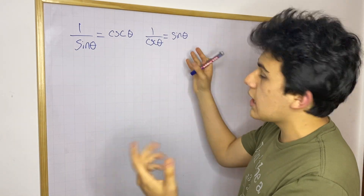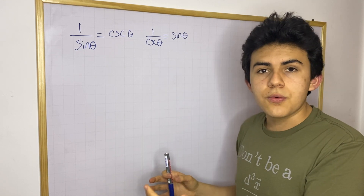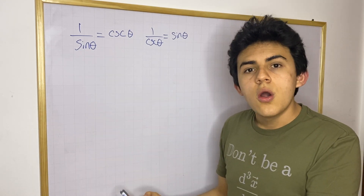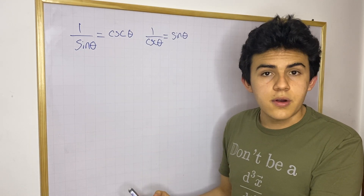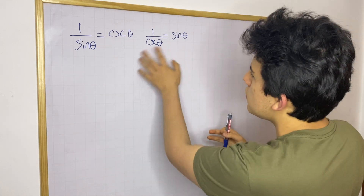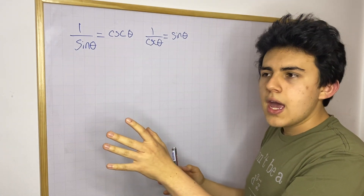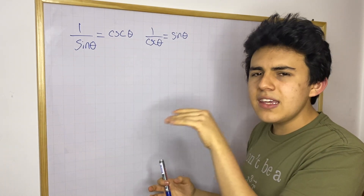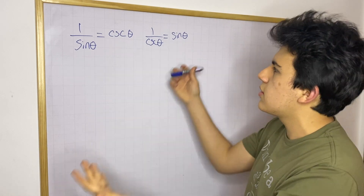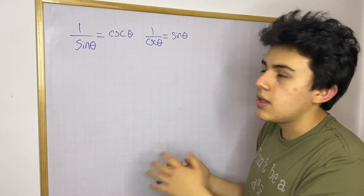That is a scenario you will encounter when doing derivatives or solving an integral. You're going to find moments when these two functions are multiplying each other, and it's going to be way easier to simply cancel them because they're equal to 1. That is really going to help you.